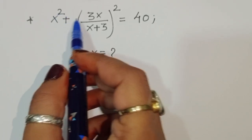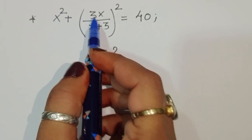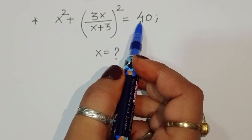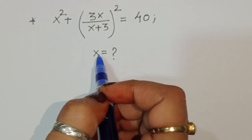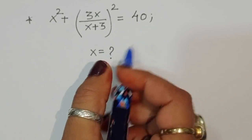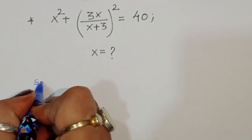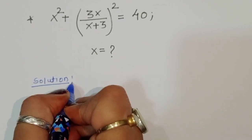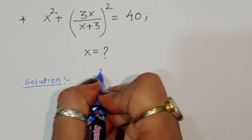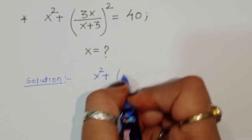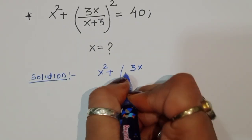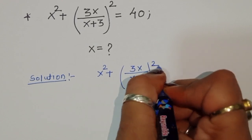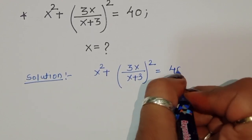The problem is given: (x² + 3x) upon (x + 3) whole square is equal to 40. We have to find out the value of x. Let's see the solution.